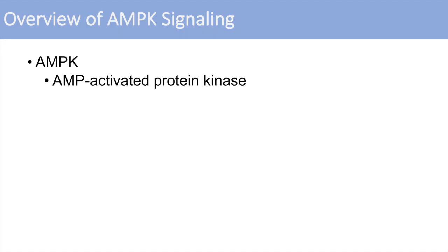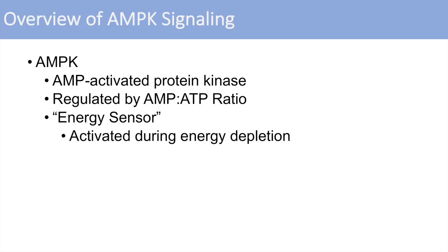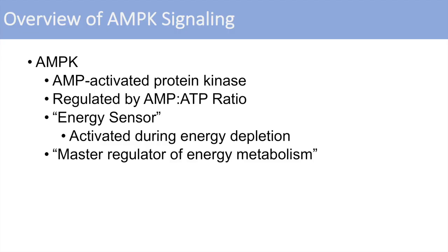So what is AMPK? AMPK is also known as AMP-activated protein kinase, and as the name suggests it is regulated by AMP — adenosine monophosphate — and primarily by the AMP to ATP ratio. When that ratio increases, AMPK becomes activated. Because it's activated by AMP, it's considered an energy sensor for the cell, and it's activated during energy depletion. It regulates many different processes in the cell, and thus it is known as the master regulator of energy metabolism.